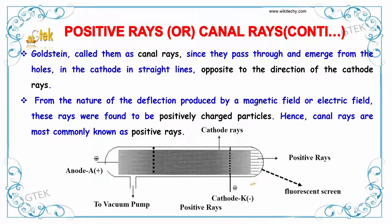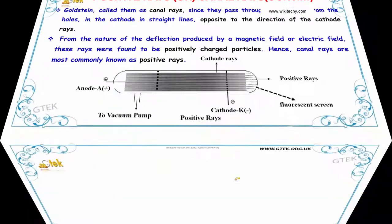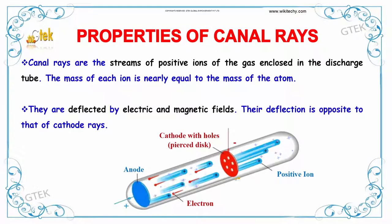Hence, canal rays are most commonly known as positive rays. Canal rays are streams of positive ions of the gas enclosed in the discharge tube. The mass of each ion is nearly equal to the mass of the atom. They are deflected by electric and magnetic fields, and the deflection is opposite to that of the cathode rays.